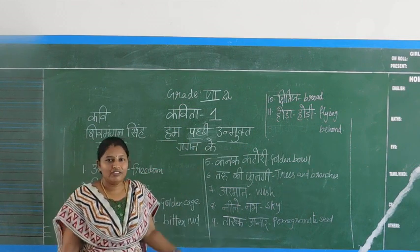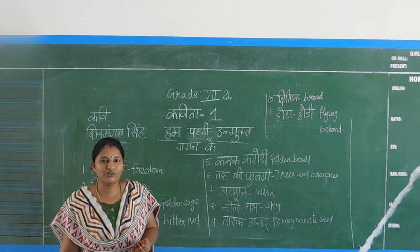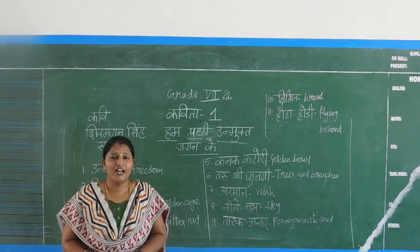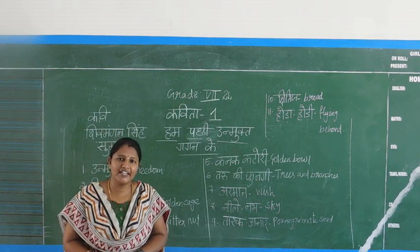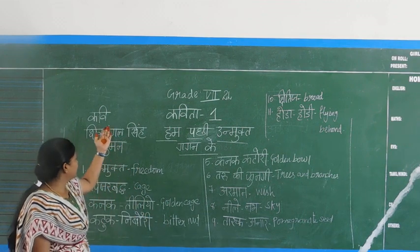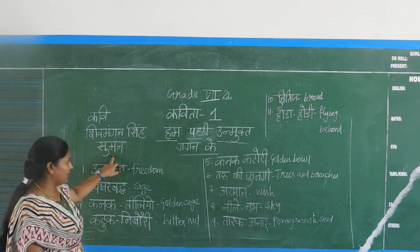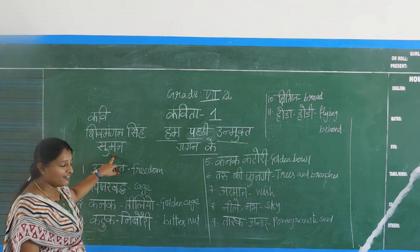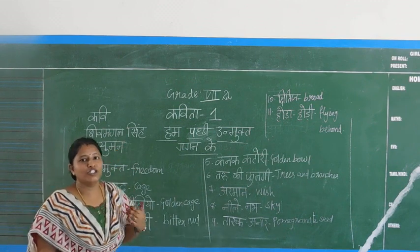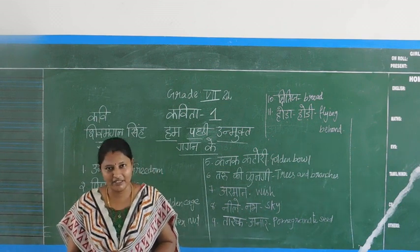This poem is related to birds — how we are treating birds in our society and how they want to live in freedom. This kavita was written by Shiv Mangal Singh Sumadhi. In this poem, he has told us about the freedom of birds — pakshiyon ki aazadi ke baare mein hume bataya hai.